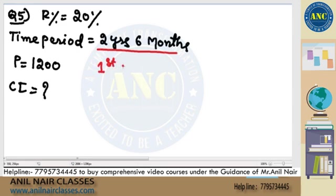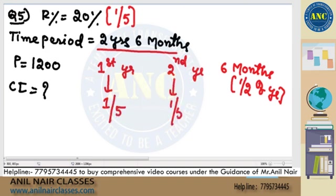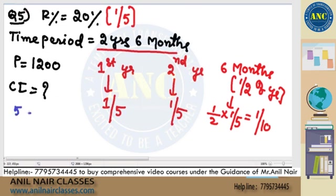First it is for the first year, second it is for the second year, and third we do not require the entire year — we require only 6 months, which is half of the total year. For each full year, 20% is nothing but 1/5. For 6 months, the rate is half of 1/5, which is 1/10.